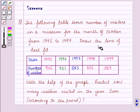We have to draw the line of best fit for this data and with the help of the graph, we have to predict how many visitors visited in the year 2000 according to the trend. Let us start with the solution of the given question.